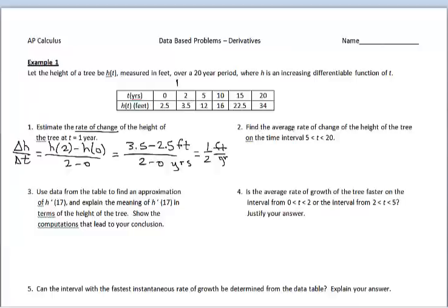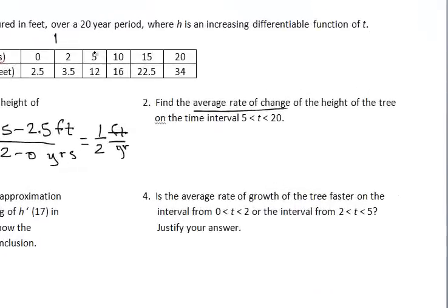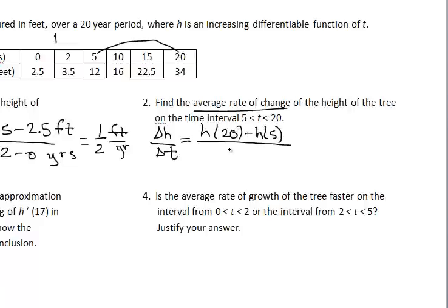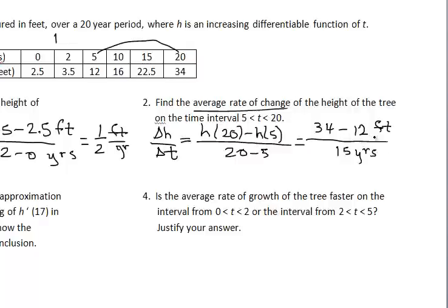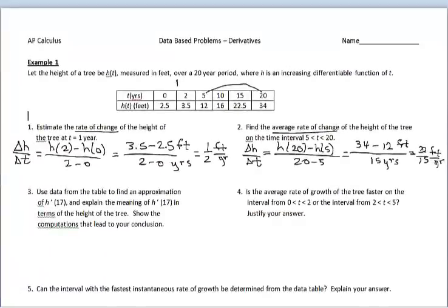Question 2 asks to find the average rate of change, delta h over delta t, on the time interval from 5 to 20. Following the same procedure, we compute change in h over change in time: h(20) minus h(5) all over 20 minus 5. h(20) is 34 feet and h(5) is 12 feet, over 15 years. That gives us 22 over 15 feet per year — about 1.5 feet per year. It's good practice to include units in this type of problem.